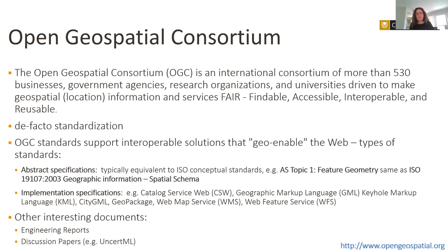For instance, a standard for feature geometry — the main object or real-world object that is standardized at OGC — is specified equivalently to the spatial schema by ISO. Several implementation specifications exist; here are just a few examples which might be familiar to you.